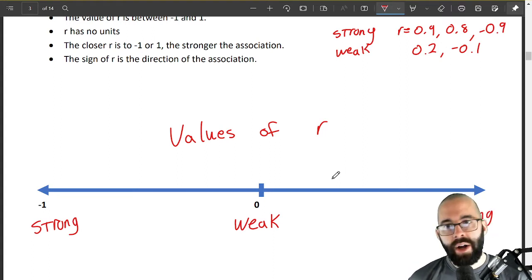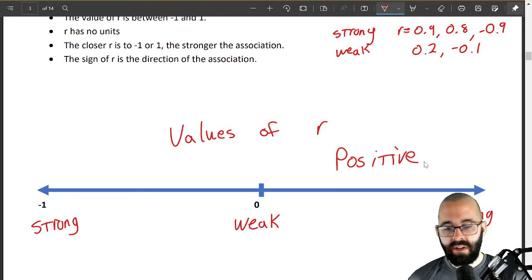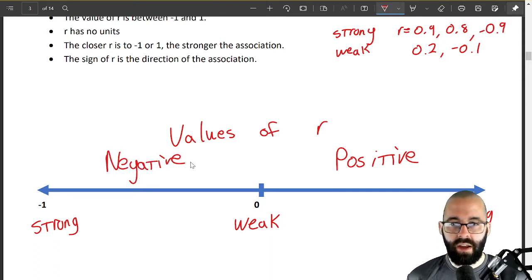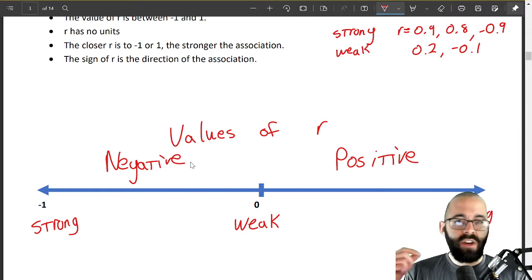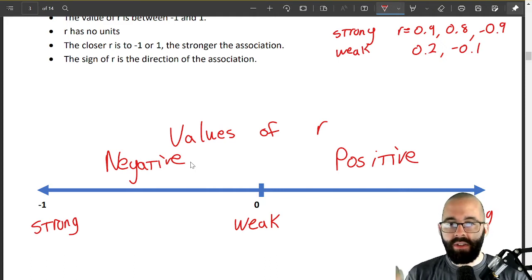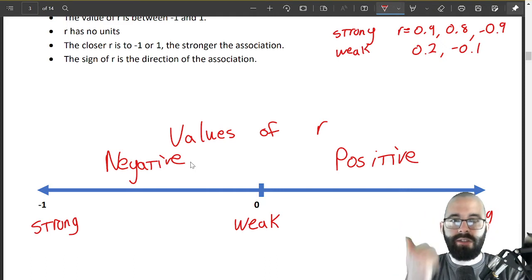But weak correlation would be something like, you know, 0.2 or negative 0.1. These are very very weak, okay? And the sign of r, positive or negative, is the direction of association. Everything over here is positive correlation and everything over here is negative correlation. It tells us two things: positive or negative depending on whether it's positive or negative, and strong or weak—the further away it is, the stronger it is.